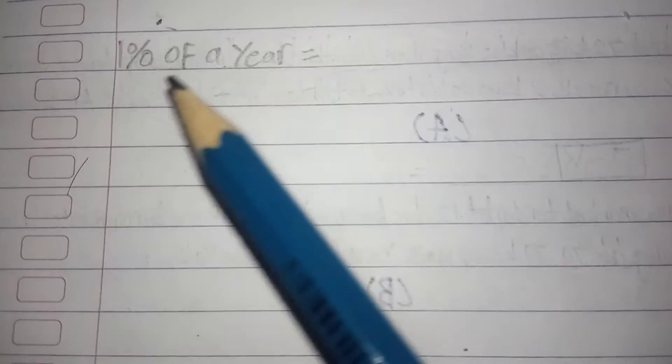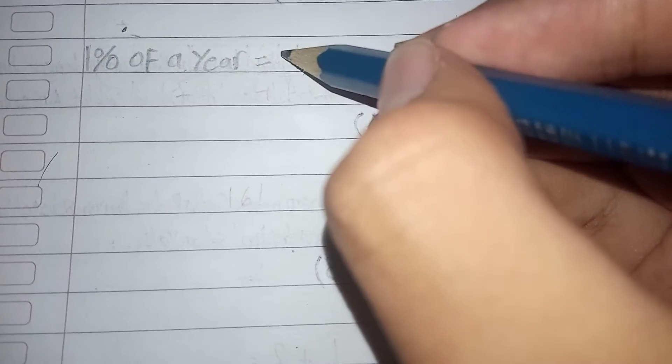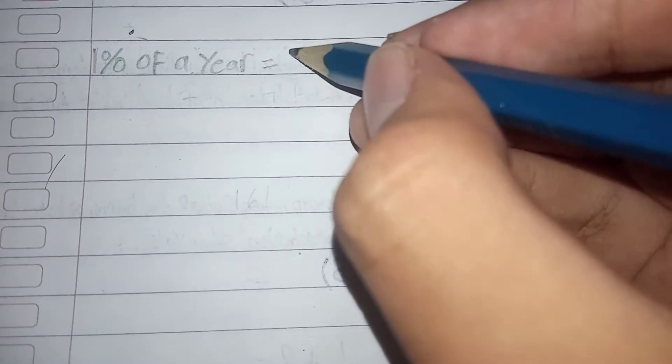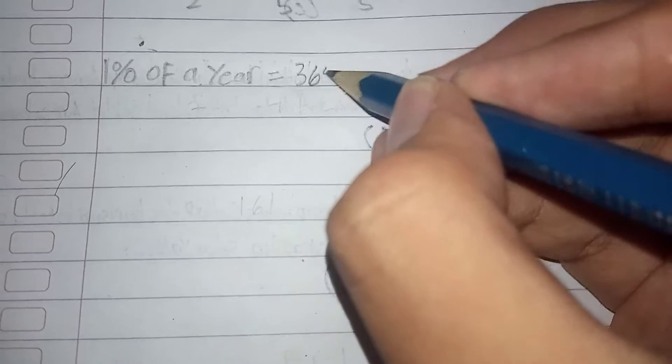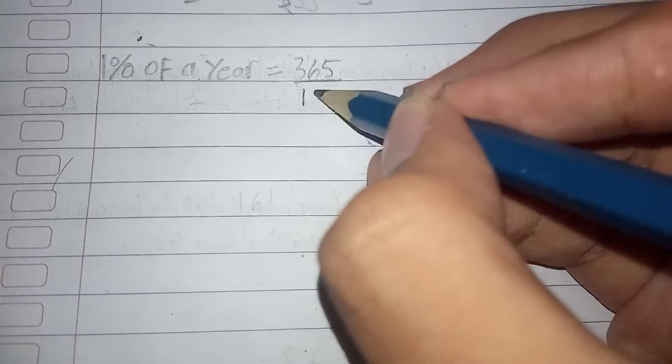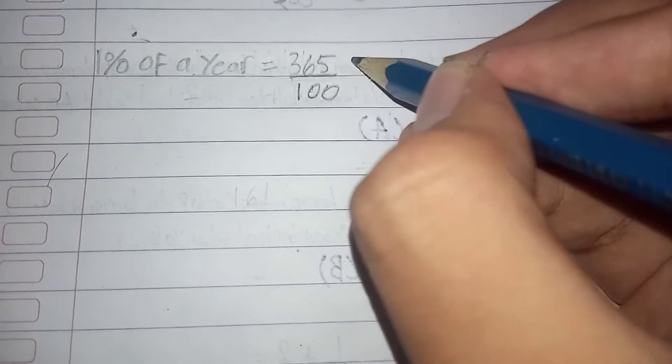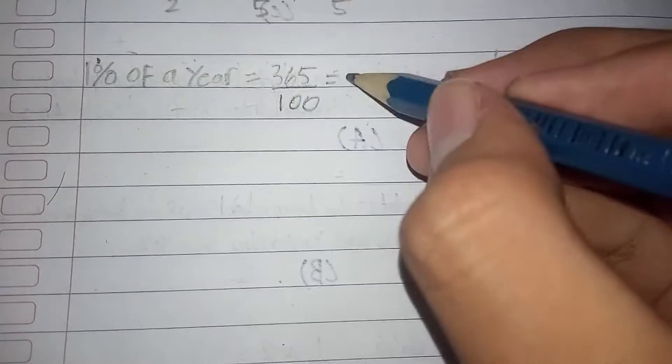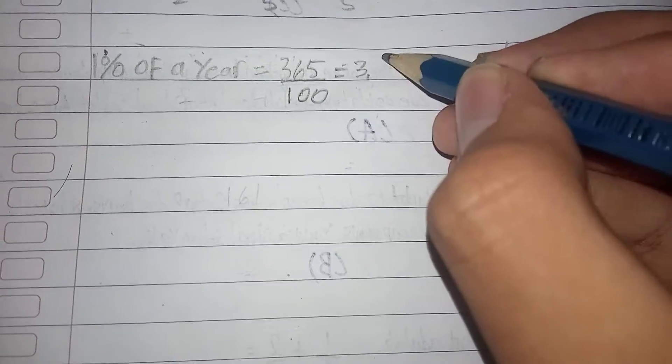Okay, now let's calculate 1% of a year. 1% of a year is just, a year has 365 days, right? Then because it's 1%, it's just 365 over 100, that's gonna be equal to 3.65 days.